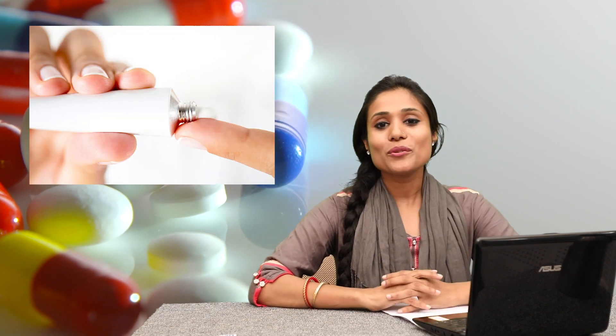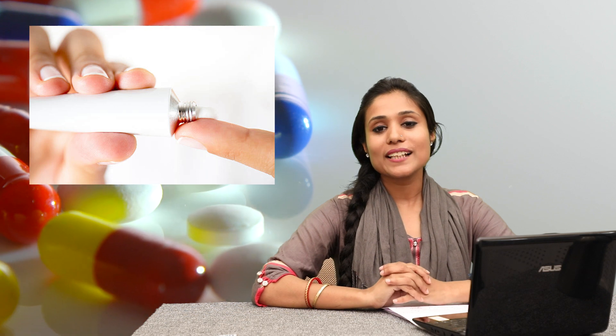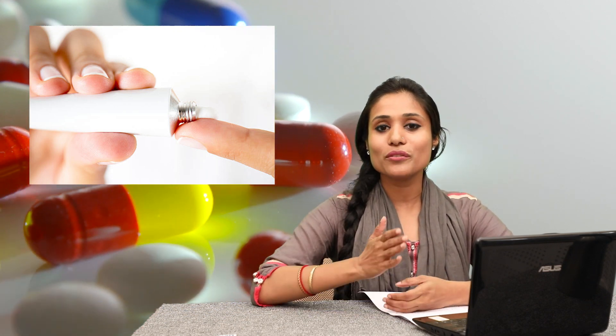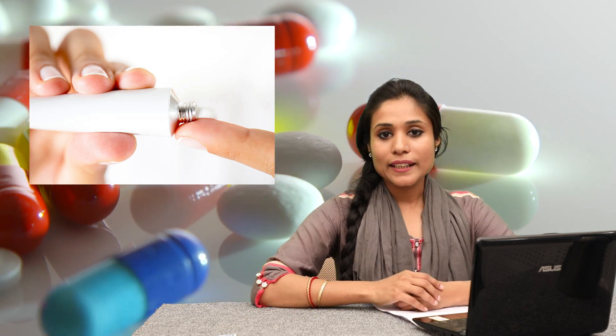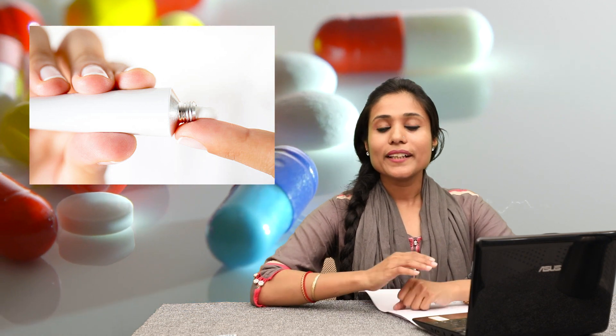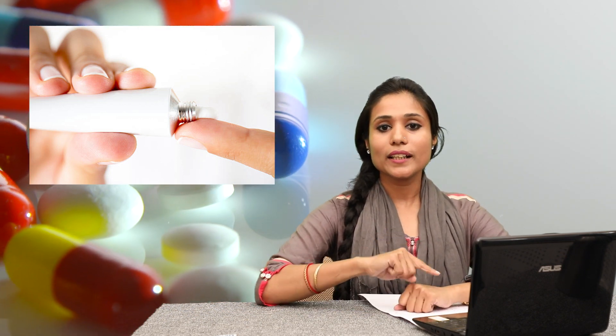Then comes Ointment. Ointments contain volatile substances used for treatment. Examples include Turpentine Oil and Eucalyptus Oil, which are applied topically for relief. Ointments have volatile substances in an oil phase.